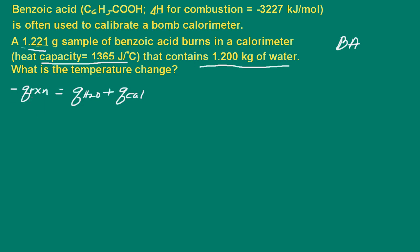Now I can determine the heat of the reaction because I have the mass of the benzoic acid and the enthalpy change. So let's calculate that. We have 1.221 grams of benzoic acid. Let's convert that to moles. So 1 mole of benzoic acid is 122.12 grams.